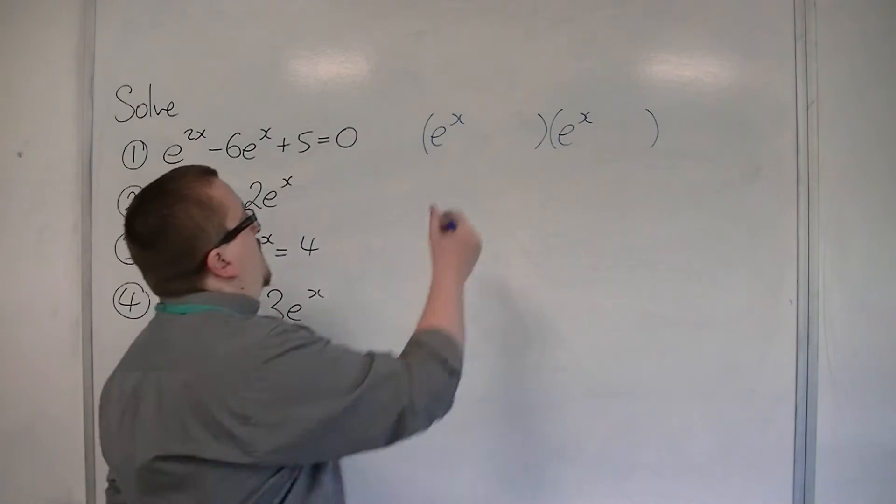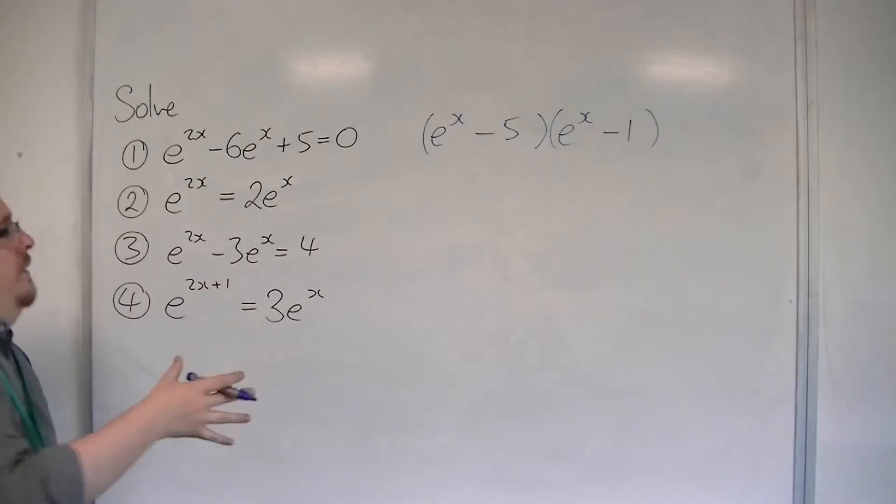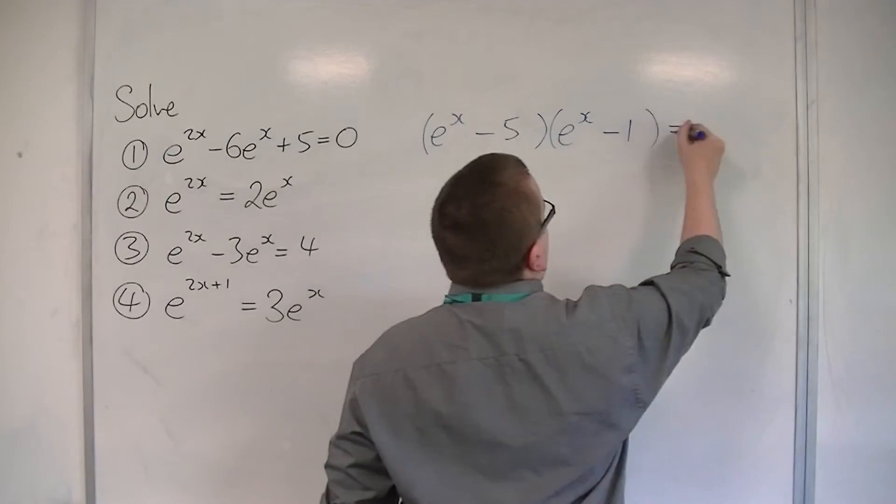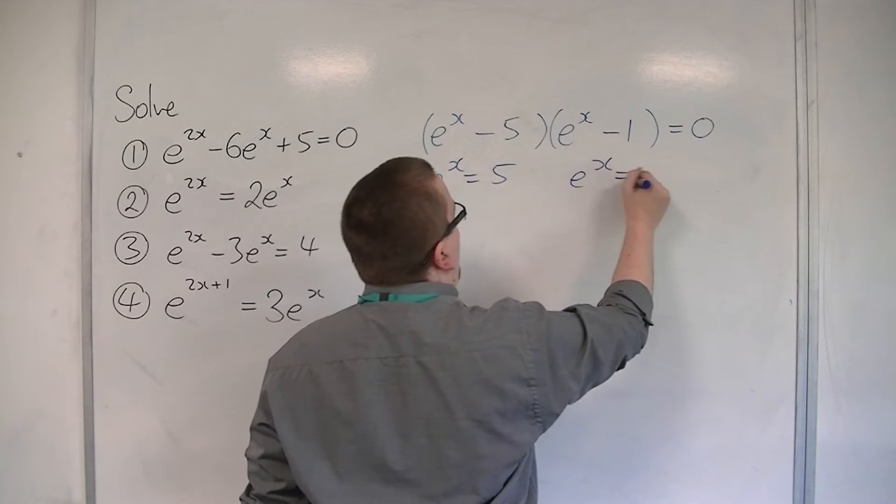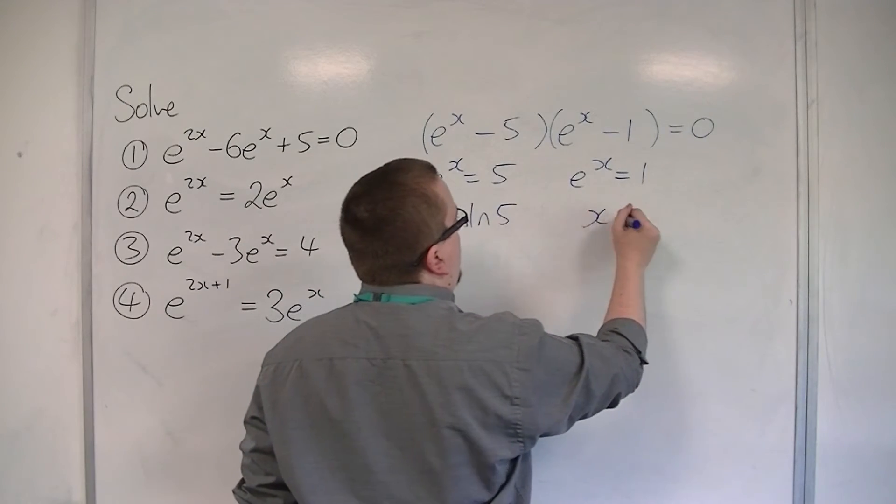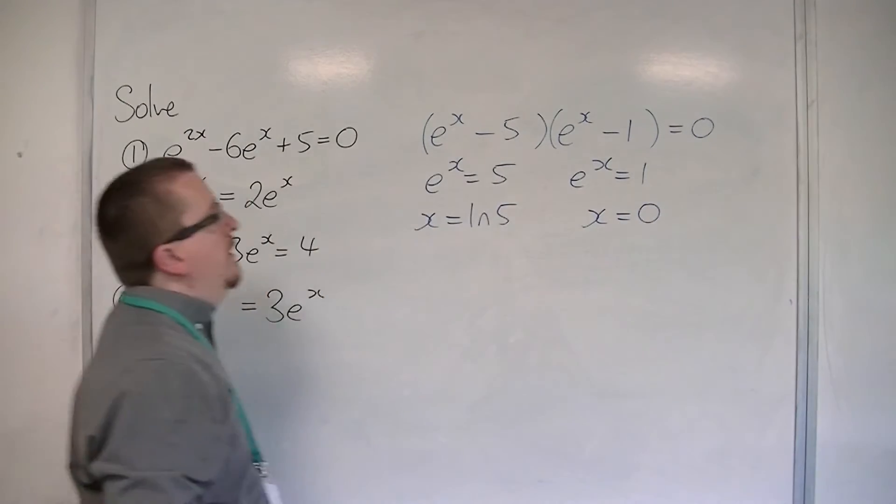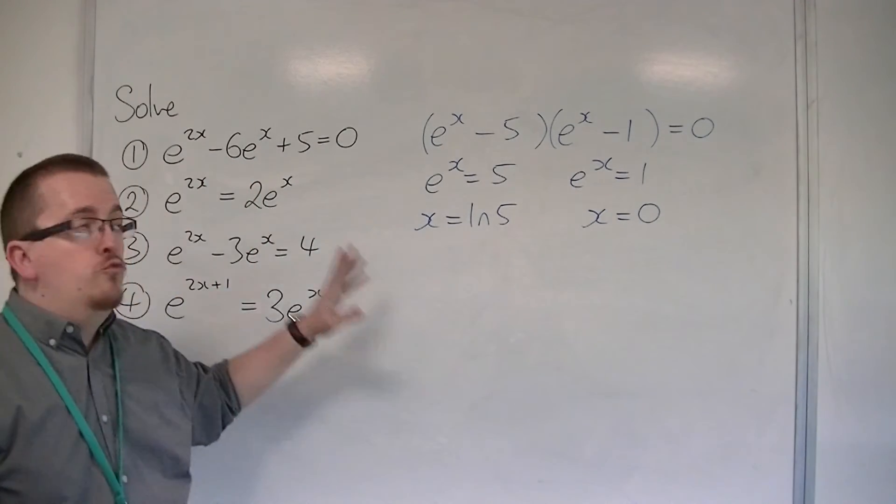So I'm going to have to have minus 5 and minus 1 for that, so that's equal to 0. So either e to the x is 5 or e to the x is 1, in which case x is log 5 or x is 0. So they are the two possible solutions for the original problem.